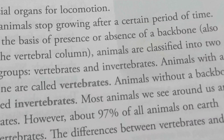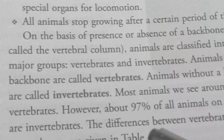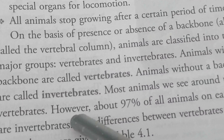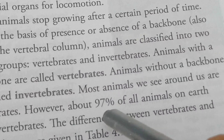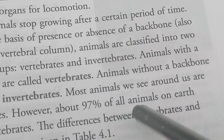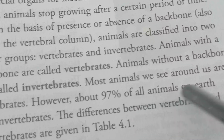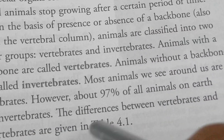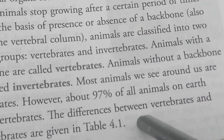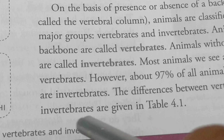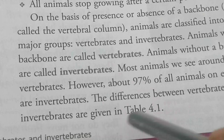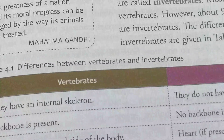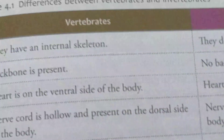Most animals we see around us are vertebrates. However, about 97% of all animals on Earth are invertebrates. The differences between vertebrates and invertebrates are given in table 4.1. So, let's look at the differences first.